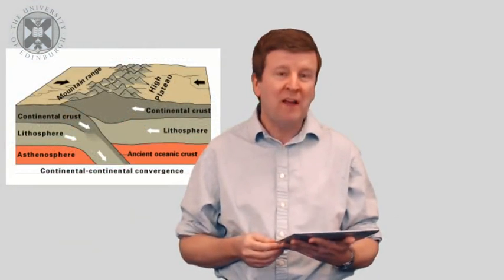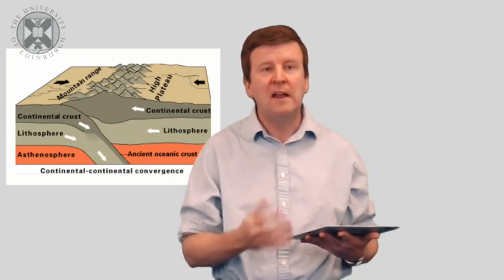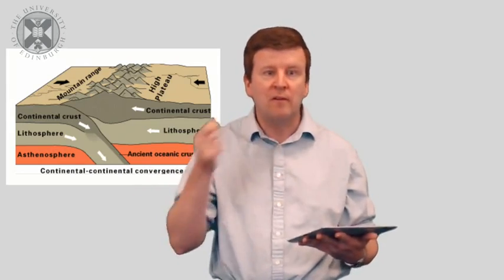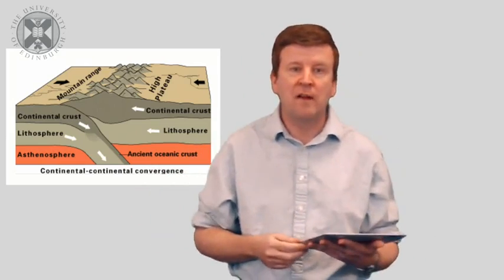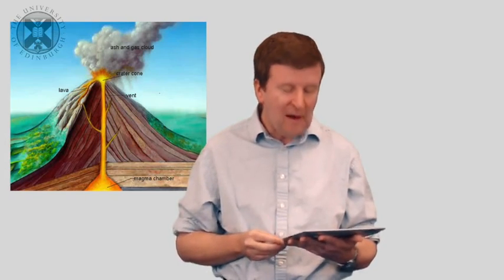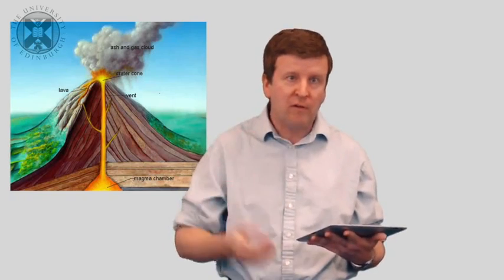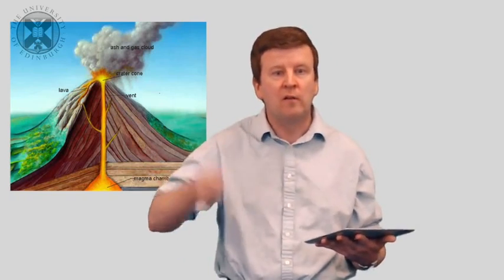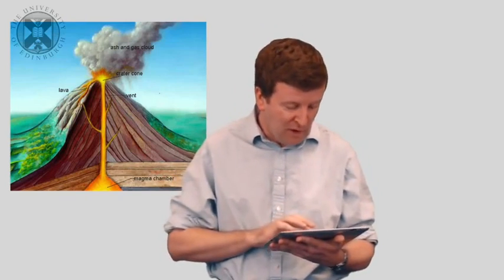We might have, for example, plate tectonics, where one plate subducts under another plate and becomes heated and melts. And these movements of plates over the surface of a planet within its crust create this turnover that's necessary to create the elements and nutrients for life. Another way is active volcanism. Volcanoes spewing lava and magma onto the surface of a planet that also creates turnover within the crust and generates new energy and nutrient supplies for life.